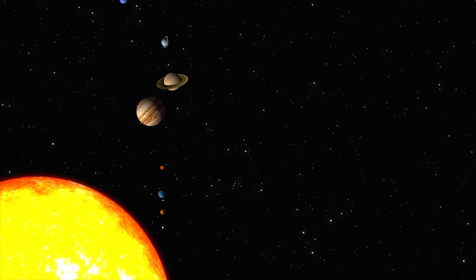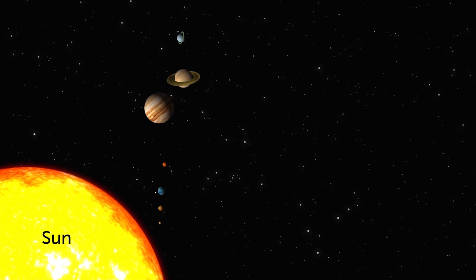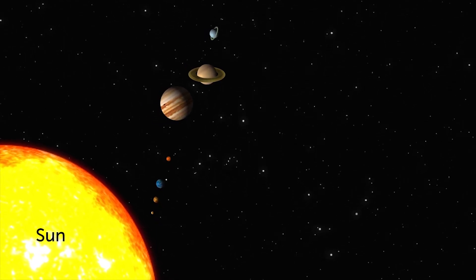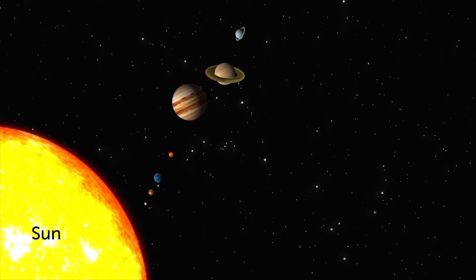At the center of our solar system is the Sun. All planets, their moons, as well as asteroids and comets orbit around it.